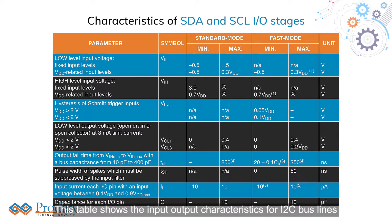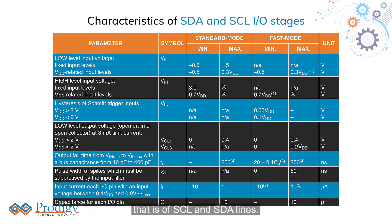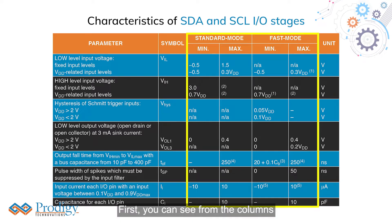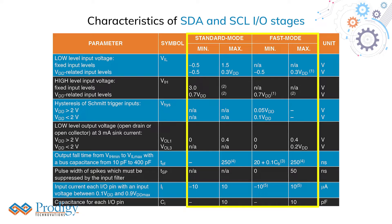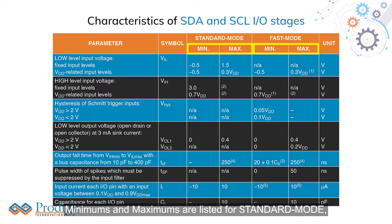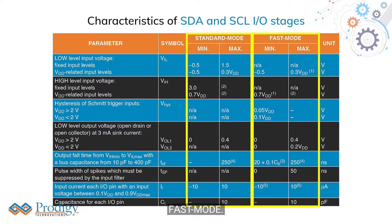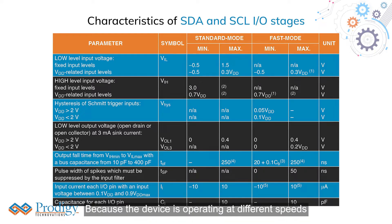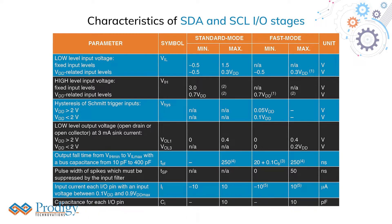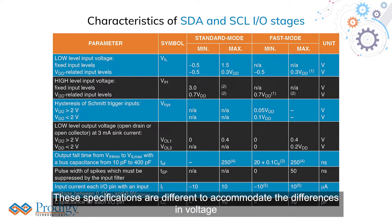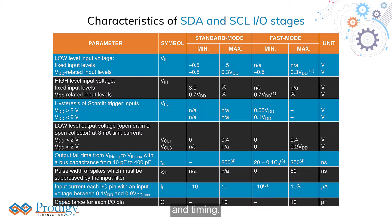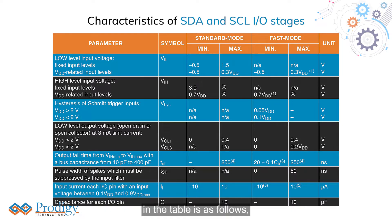This table shows the input-output characteristics for the I2C bus lines — that is, the SCL and SDA lines. You can see from the columns that the specifications are different for different I2C speed modes. Minimums and maximums are listed for standard mode and fast mode. Because the devices operate at different speeds, these specifications are different to accommodate the differences in voltage and timing. Some of the interesting parameters to watch out for in the table are as follows.